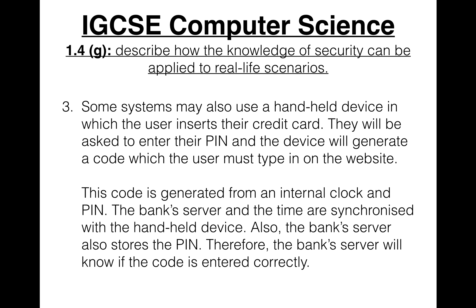Some systems use a handheld device where the user inserts their credit card — commonly seen in restaurants when paying with card. The user enters their PIN, and the device generates a code based on an internal clock and the PIN. The bank's server is synchronized with the handheld device and also stores the PIN, so it can verify if the code entered on the website is correct.